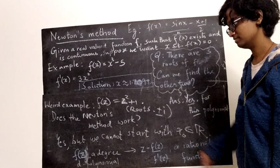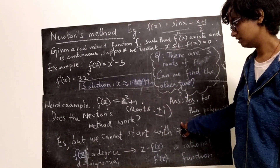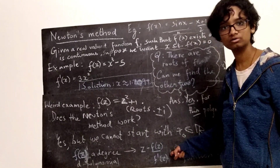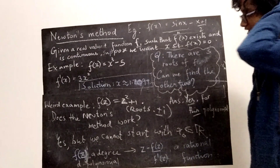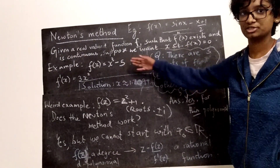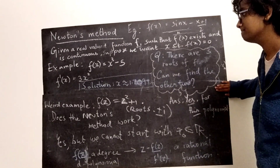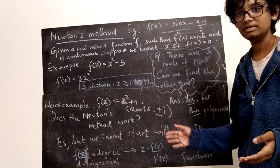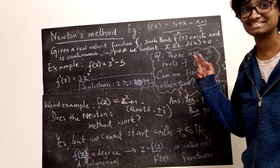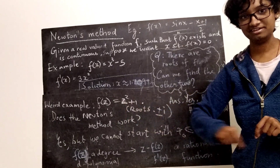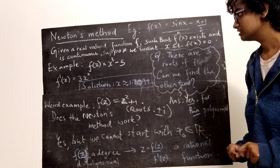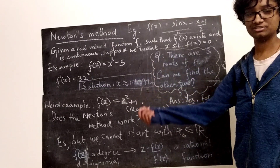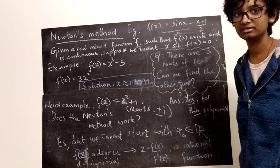Here's another example: f(z) = z² + 1, with roots +i and −i. The same problem arises — starting from a real number, iterating the formula never produces a complex number. However, for z³ − 5, Newton's method does work if you start with a suitable complex number. There is a region of the complex plane — essentially everything except a set of zero area — such that starting from any point in that region and iterating converges to a root.